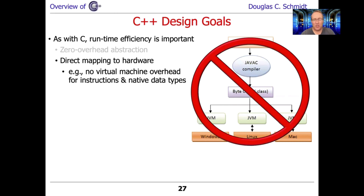Another key theme related to this is the concept of direct mapping to the hardware. C++ doesn't require any virtual machine or interpretation — it uses native data types. As a result, it's very close to the wire, very close to the hardware, which means you get the benefits of abstraction with almost zero cost. There are versions of C++ with so-called managed extensions, but those are not actually part of the C++ standard.